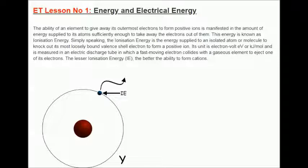Hence as the start, this video brings you an in-depth understanding of energy and electrical energy. The ability of an element to give away its outermost electrons to form positive ions is manifested in the amount of energy supplied to its atoms sufficiently enough to take away the electrons out of them. This energy is known as ionization energy.